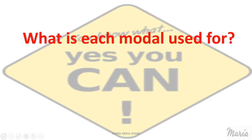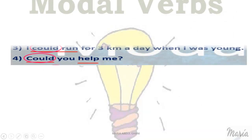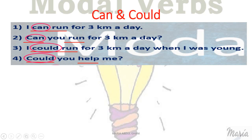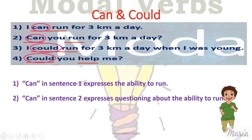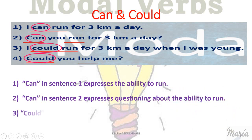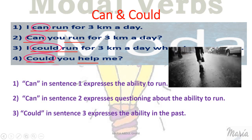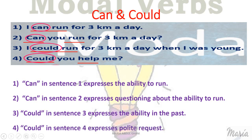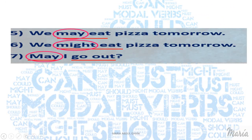What is each modal used for? Can and could: Can in sentence one expresses the ability to run. Can in sentence two expresses questioning about the ability to run. Could in sentence three expresses the ability in the past. Could in sentence four expresses a polite request.